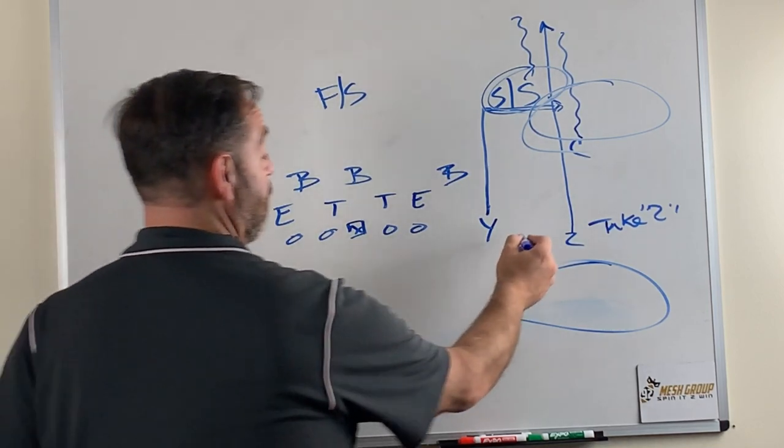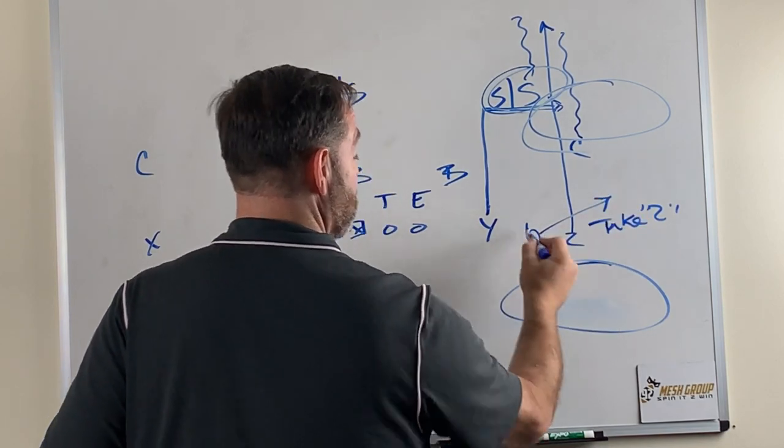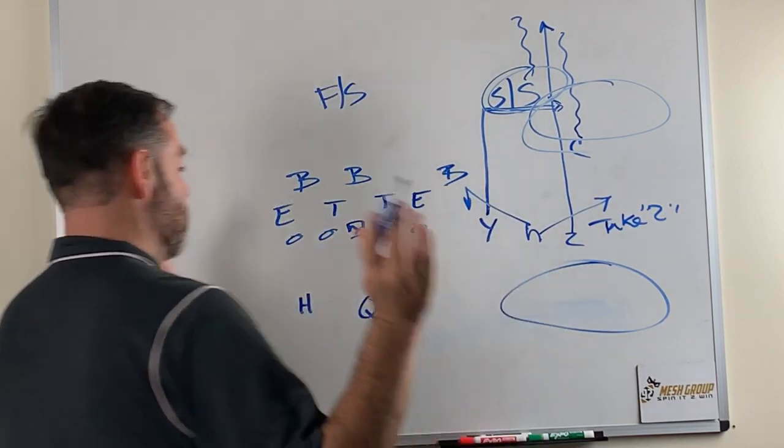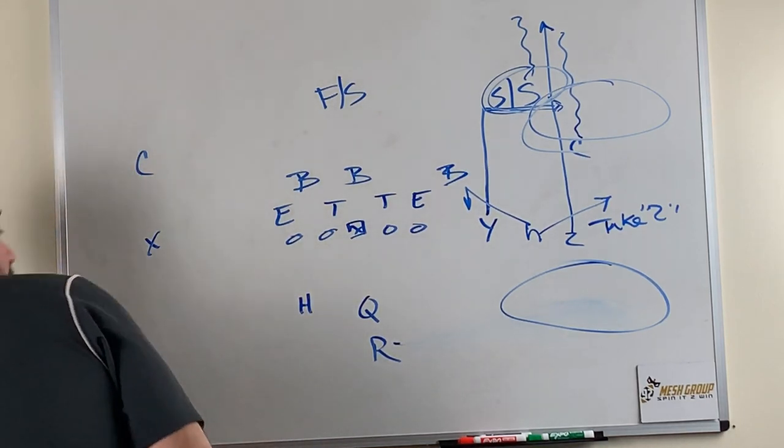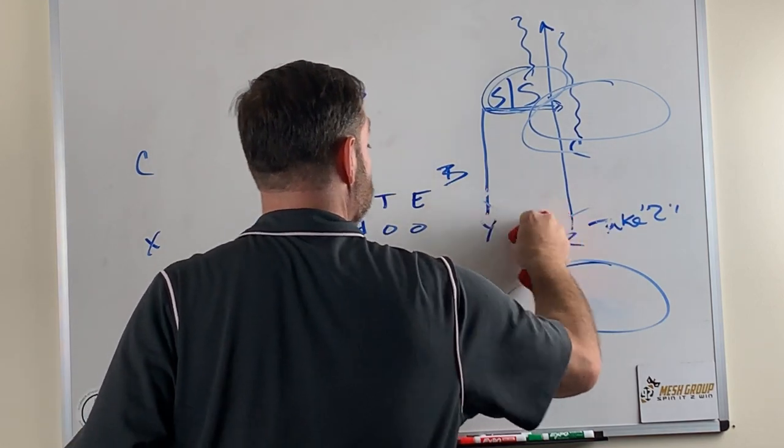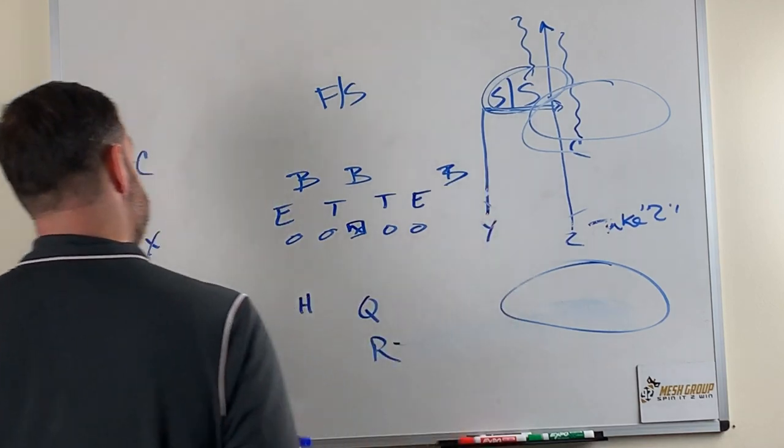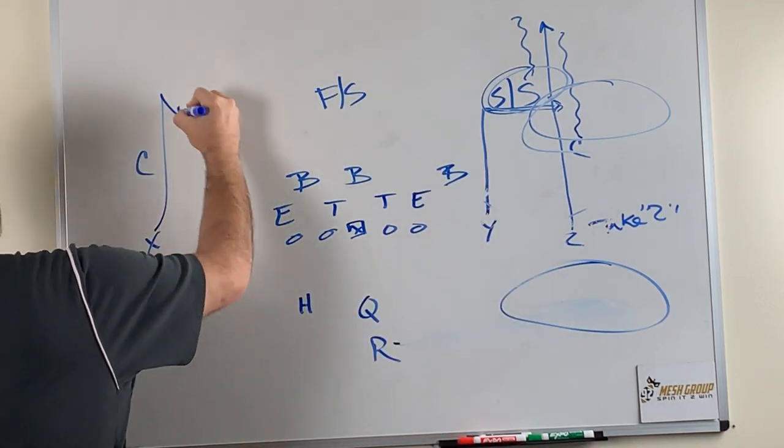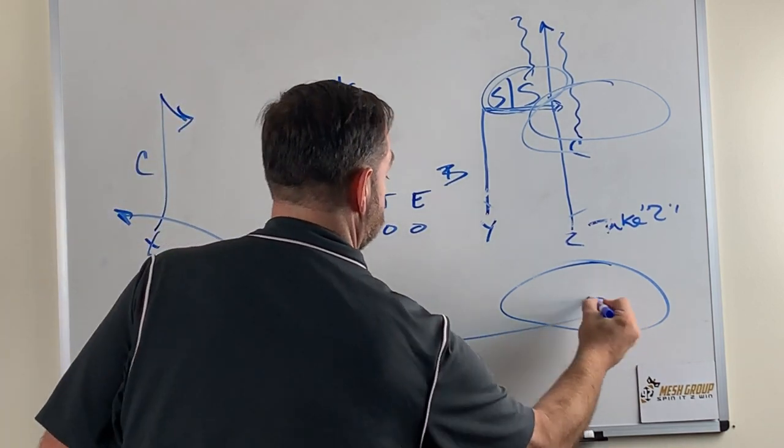Obviously, if we go three by one, the H can do a bunch of different things, however you want to do that, and the three by looks tough. But in the two by two, that's kind of what you're looking at, is that take two by the Z, and then on the back side, obviously, we're going to put curl flat.